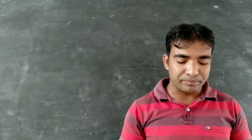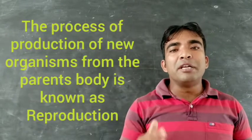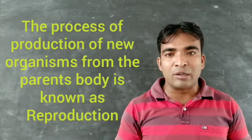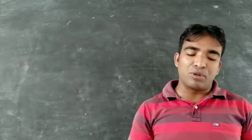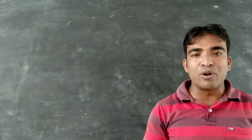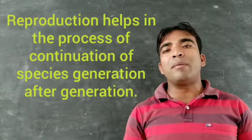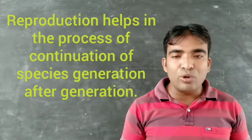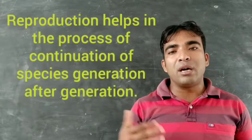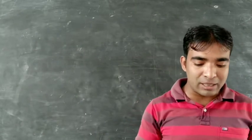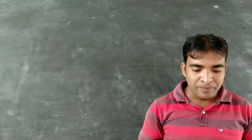First of all, we have to understand what is reproduction and why it is necessary. Reproduction means producing a new organism. The production of a new organism from the parent's body — this process is known as reproduction. Reproduction is necessary because it helps in the continuation of the species generation after generation. If there is no reproduction, there will be no continuation of the species.